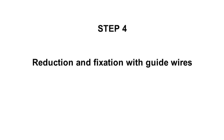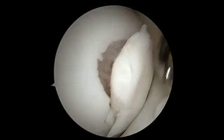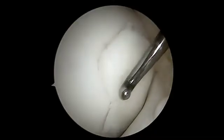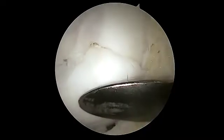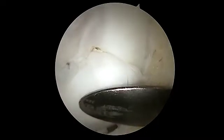The backside of the fragment may also be microfractured if there is enough bone. Once the bed and backside of the lesion has been prepared, the fragment is reduced back into its bed. The fragment should lie flush with the surrounding healthy cartilage.